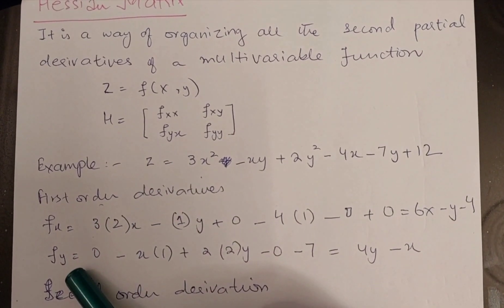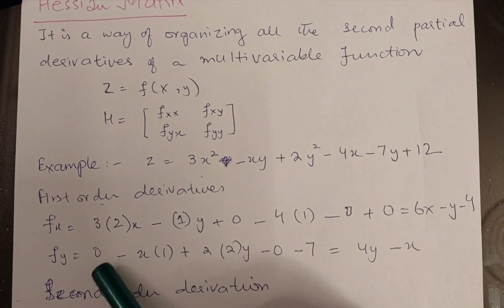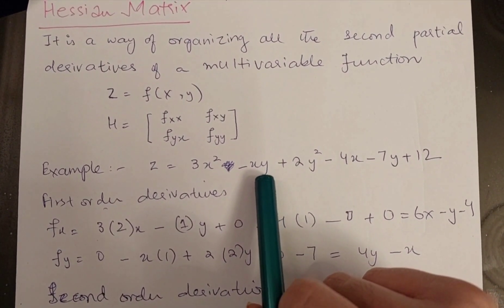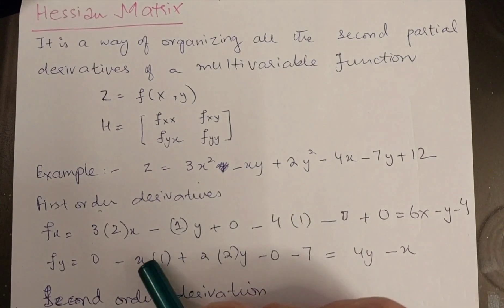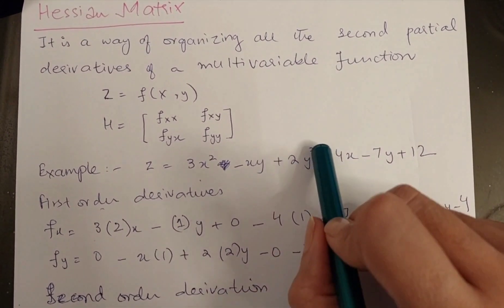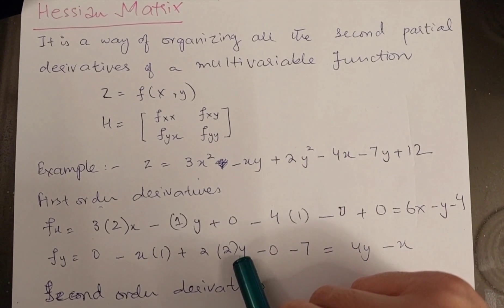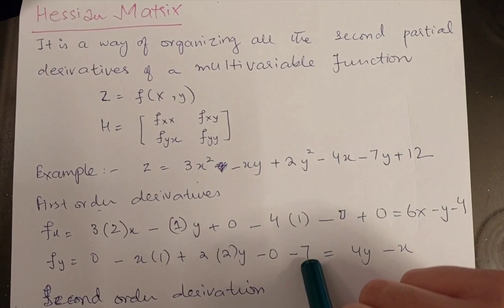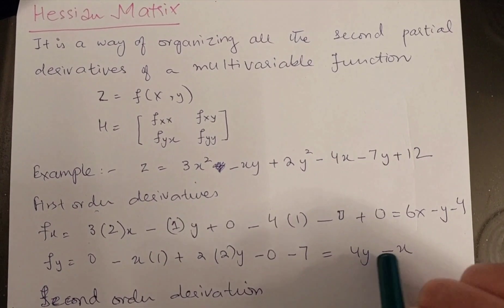Now I am taking the first-order derivative of this function with respect to y. For the first term, since there is no y, the derivative is 0. For the second term, there is one y, so the derivative of y with respect to y is 1 and x simply behaves as a coefficient. For the next term, the 2 comes as a coefficient, the power of y comes down to multiply, and y reduces in power by 1. The next term becomes 0, the following term gives 7, and the last term becomes 0. So the answer is 4x minus y.